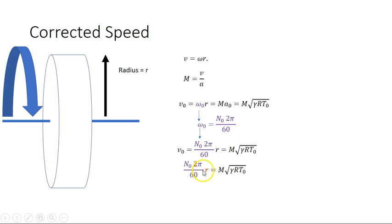So there we are, and so 2 times the radius is the diameter, so I'm just going to rearrange all of this to have an expression for the RPM at sea level conditions. So there it is there.